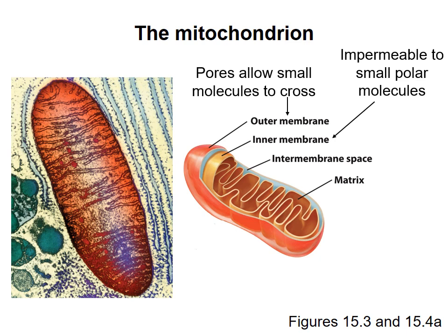There is an intermembrane space, indicated by the blue here, and you can see that it actually extends towards the center of the mitochondrion because of the folds in the inner mitochondrial membrane. Finally, we have the matrix, which is the space enclosed by the inner mitochondrial membrane.